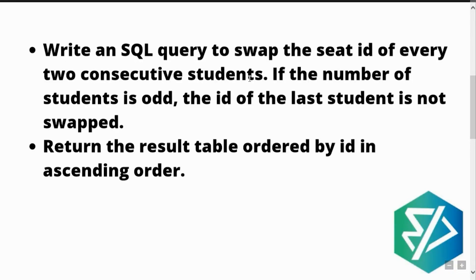Consecutive students means students that are present one after the other. The ID of such two consecutive students has to be swapped, which means exchanged. Then, if the number of students is odd — meaning if the ID is an odd number and also the ID is of the last student — then it is not swapped; it is kept unchanged.